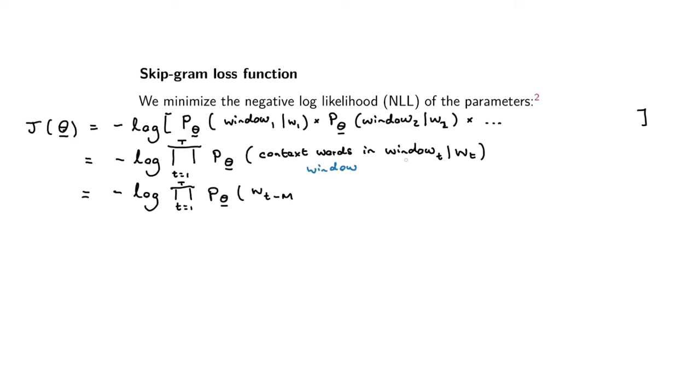We've got the first word that is m before the center word. And what is m? m is our window parameter. It says how far are we looking into the past and how far into the future. In the example we looked at before, m was two because we looked two words before and two words following the center word.